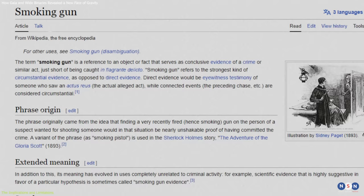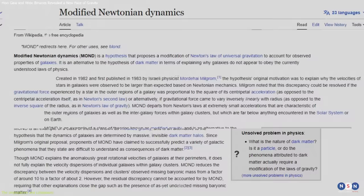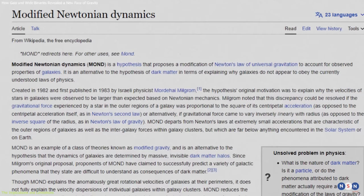Smoking gun evidence is a term used to describe evidence that is so strong and conclusive that it leaves no doubt about the truth or validity of something. This study supports the idea of modified Newtonian dynamics.